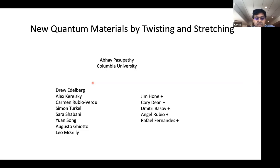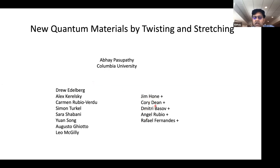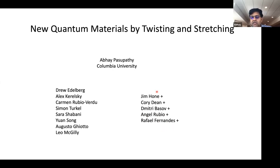Let me first acknowledge the main people who have done the work. At Columbia we have a pretty big group working on 2D materials, and I've benefited extensively from collaborating with Jim Hone, Corey Dean, and Dimitri Basov — my three main collaborators in this area. We've also had lots of theory help from the group of Angel Rubio at the Max Planck in Hamburg, and my longtime collaborator Rafael Fernandez.